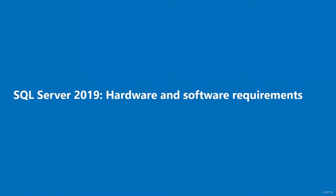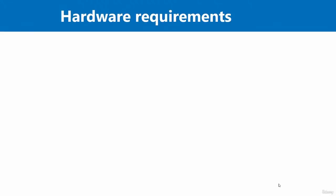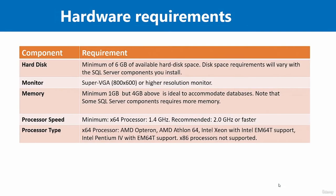Hello and welcome to this video. In this video, I'm going to briefly list the minimum hardware and software requirements needed to install and run Microsoft SQL Server 2019 on a Windows operating system. Starting with the hard disk: the minimum size is 6 GB of disk space. However, the disk space requirements can vary depending on the SQL Server components you install, and you may require much more than the minimum 6 GB.